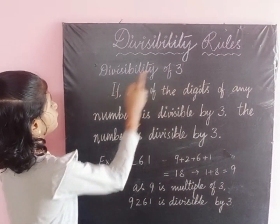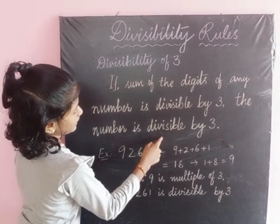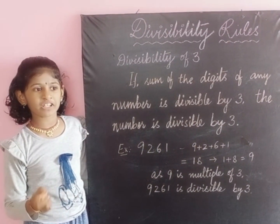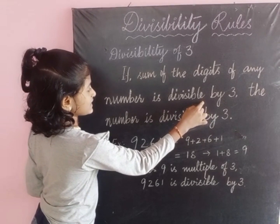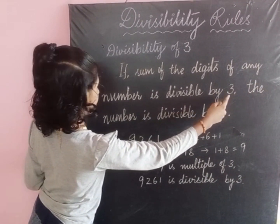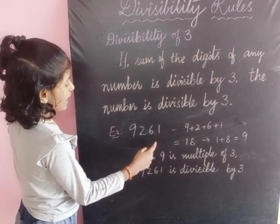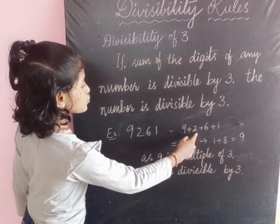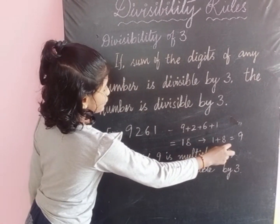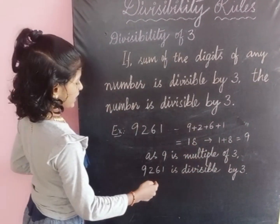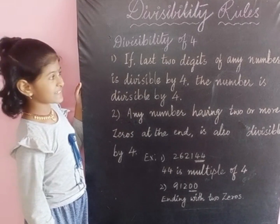Let us see the divisibility of 3. If the sum of the digits of any number is divisible by 3, the number is divisible by 3. For example, we took 9261 and added all the digits: 9 plus 2 plus 6 plus 1, which gives us 18. Again, 1 plus 8 equals 9. As 9 is a multiple of 3, the whole number 9261 is divisible by 3.